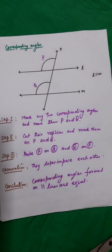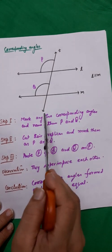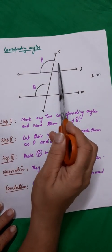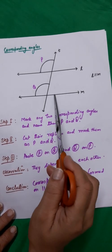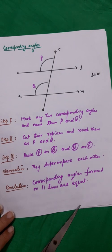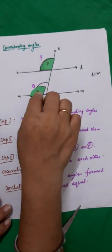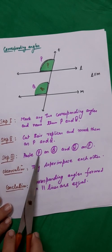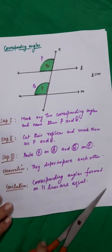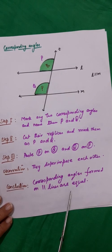Next we will show that corresponding angles are equal. Steps are the same: draw a line L parallel to M and the transversal T. Mark any two corresponding angles — for example, this and this on each side. Mark them with the compass. Cut their replicas and label them P and Q. P is cut from one angle and Q from the other. Paste P on Q and Q on P. Observation: they superimpose each other. Conclusion: corresponding angles formed by parallel lines are equal.